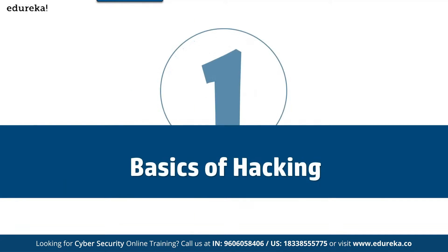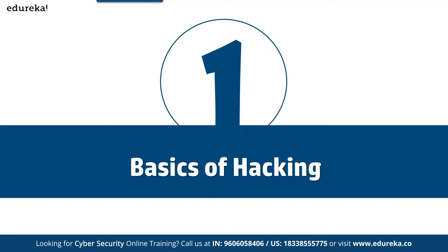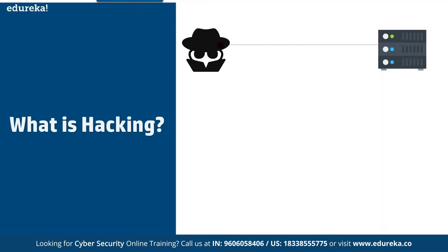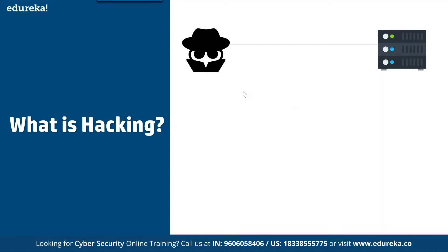Let's get started. The first topic is the basics of hacking. Let's understand what exactly hacking is, because most of the time people get confused. Hacking basically means it's an act — a way of finding the vulnerabilities in your system and systematically exploiting them. You find the bugs and vulnerabilities in the system and then exploit those vulnerabilities. Hacking is classified into two parts.